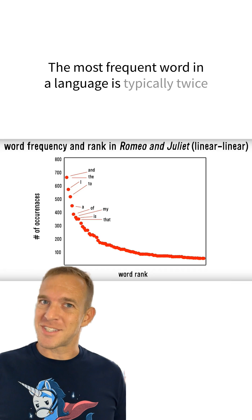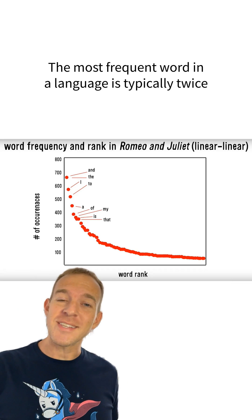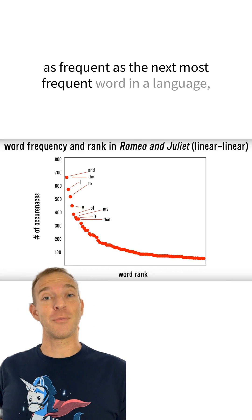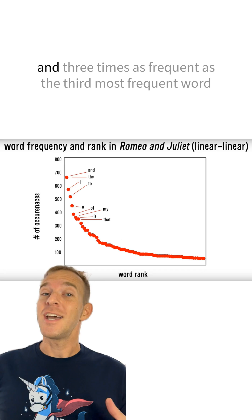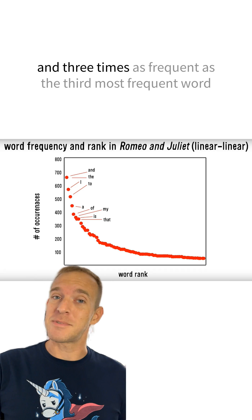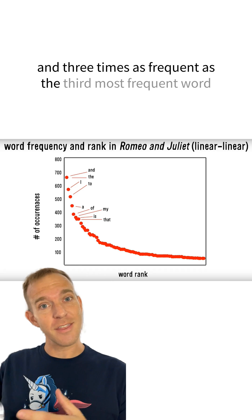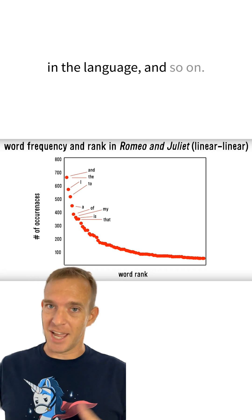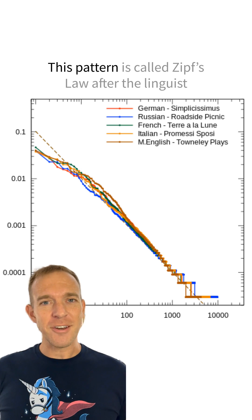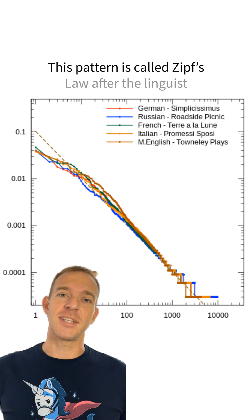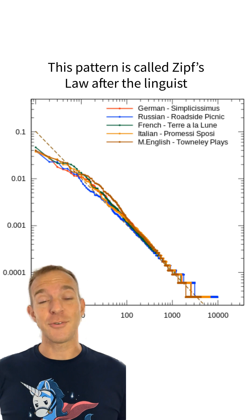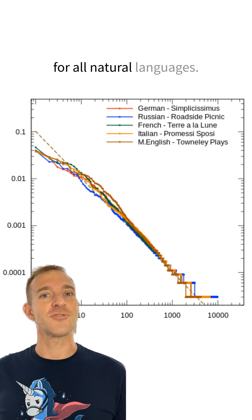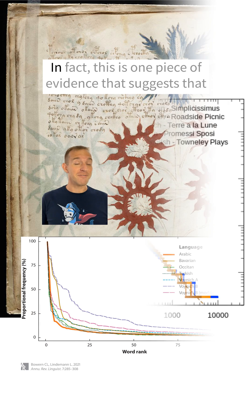The most frequent word in a language is typically twice as frequent as the next most frequent word in a language, and three times as frequent as the third most frequent word in the language, and so on. This pattern is called Zipf's Law after the linguist who discovered it, and it holds approximately for all natural languages.